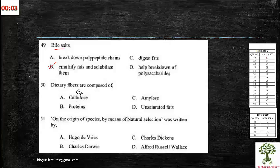And the dietary fibers are composed of mostly cellulose, so 50 is A. On the Origin of Species by means of Natural Selection was written by, you know him, Charles Darwin.